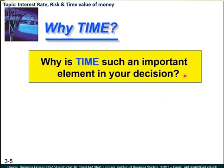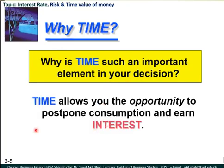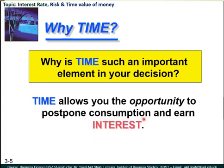Why is time such an important element in your decision? Because time allows you the opportunity to postpone current consumption and earn interest. When you are going for an investment opportunity, what you are actually doing is postponing your current consumption in order to increase your accumulated amount. For example, you have invested $10,000 in a bank account in order to earn interest, because in the current prevailing situation you might not be in need of these $10,000. So you have opted to invest in a bank account which will provide you a certain amount as interest as a percentage of your principal amount invested, and after the completion of one year this interest rate shall be credited to your account.